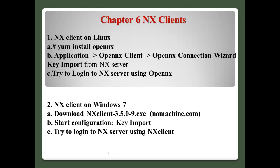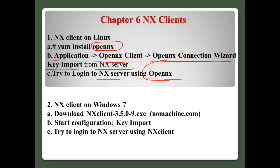Testing NX on the NX client. Number one - NX client on Linux. On the Linux system, install OpenNX. To use it, click Applications > OpenNX client > Connection Wizard. The other configuration is not difficult, but when you configure this part, please focus on the key import from the NX server. Number two - NX client on Windows 7. First, download NX client from the website, then install it. This is similar to OpenNX configuration - it also needs the key import. After that, try to login to the NX server from the NX client.